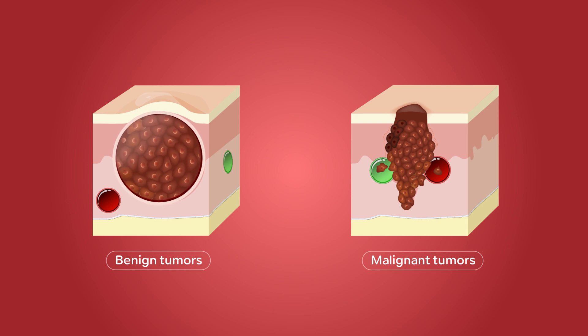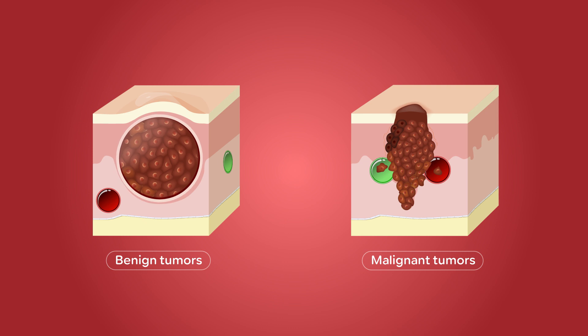Remember: benign tumors stay where they are, while malignant tumors spread, or metastasize. Also remember that not all cancers form tumors. For example, leukemia is a type of cancer that affects the blood and blood-forming tissues such as the bone marrow, but doesn't form solid tumors.